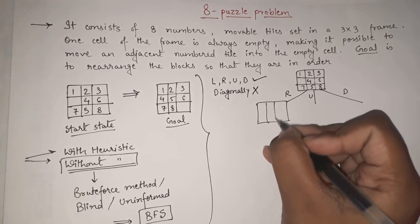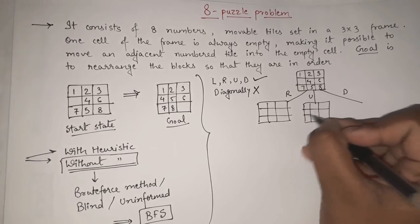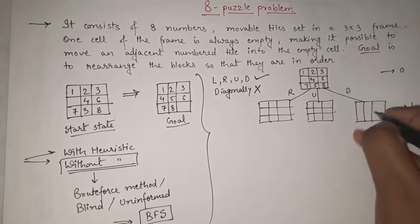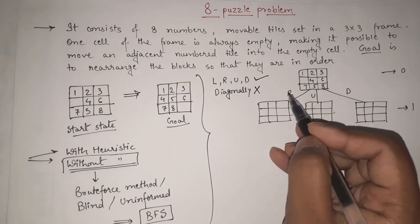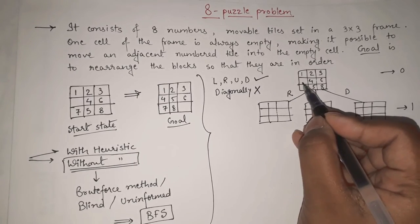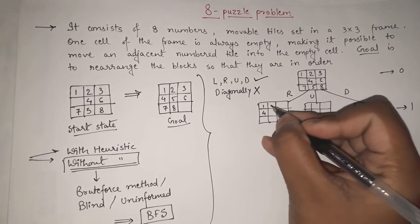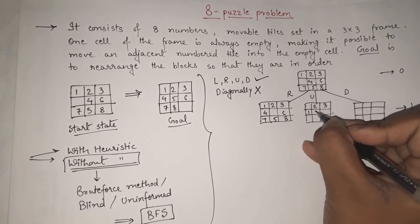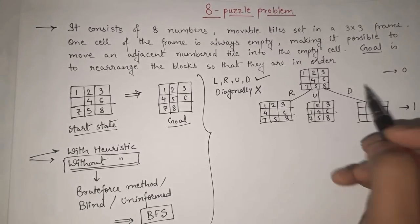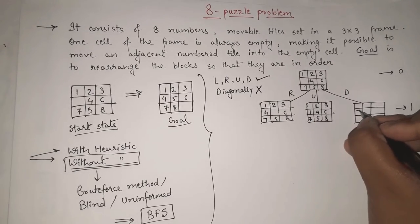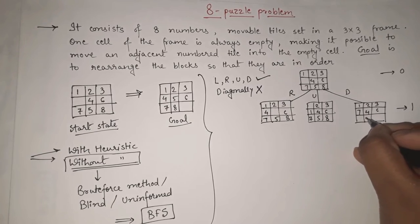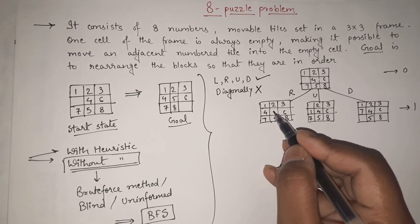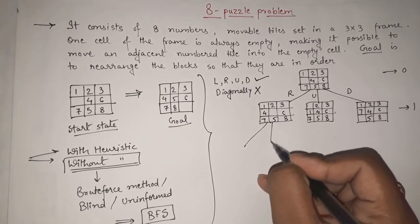We are doing BFS — breadth-first search — meaning level by level. This is level 0 and the next is level 1. If I move the blank space right, 4 will come here and others remain as is: 6, 7, 5, 8. If I move it up, 1 will come down and others stay as is. If I move the blank space down, 7 will come here. So these are the 3 possibilities from level 0 to level 1.